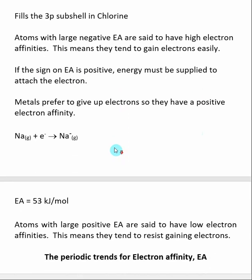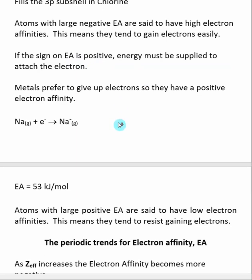The exact opposite is true. If the sign on an electron affinity is positive, that means we need to put energy into the system in order for the electron to be attached. A good example of this is metals. Metals prefer to give up electrons to become positive, and we saw this when we were talking about the electron configuration of cations, that most metals prefer to give up electrons.